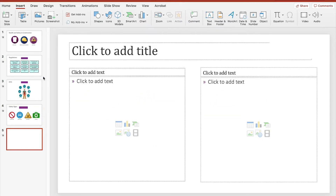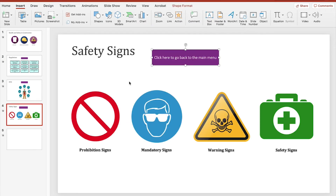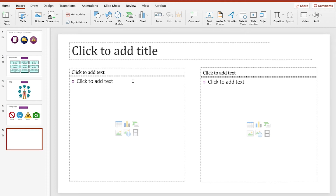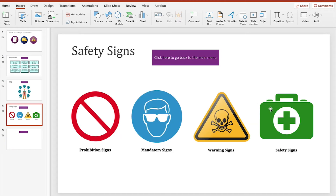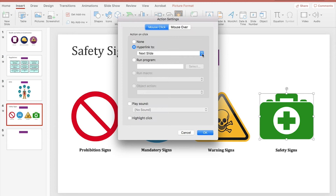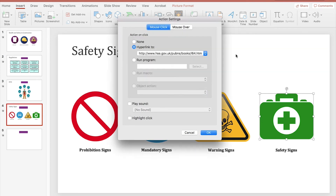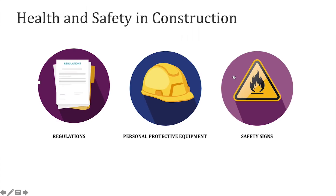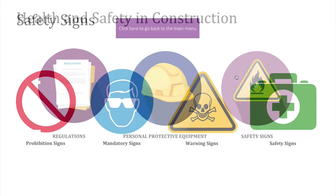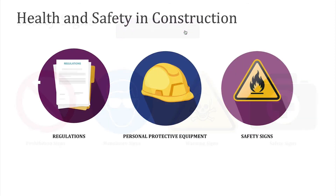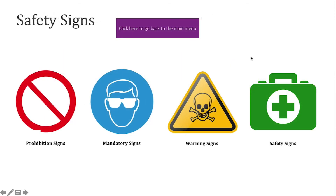Once you've created buttons with actions, you can copy and paste them into new slides to save you creating ones each time. You can also hyperlink out to web pages too using the same method, but choosing URL from the hyperlink menu. So let's take a look at it in action. You can see now that when we click the safety signs, it jumps to the safety signs page.